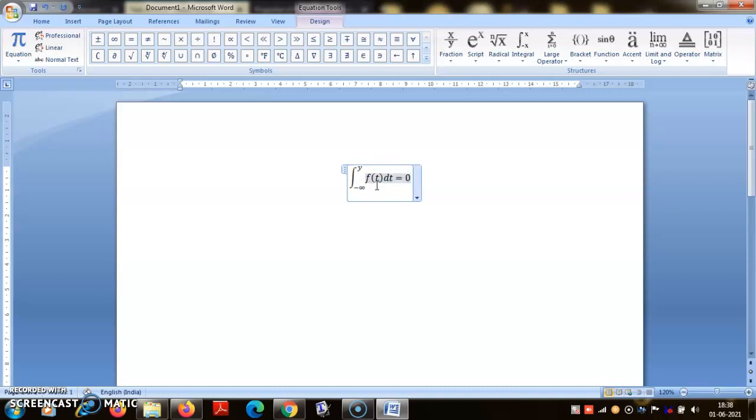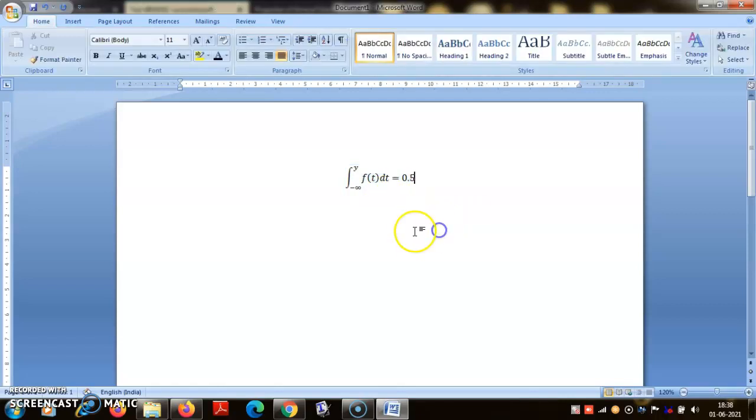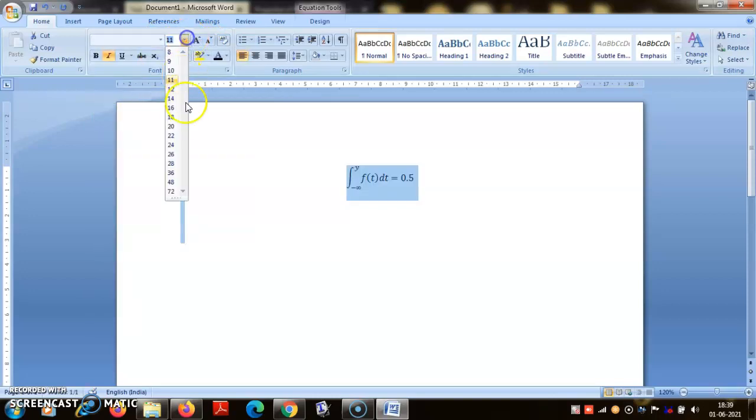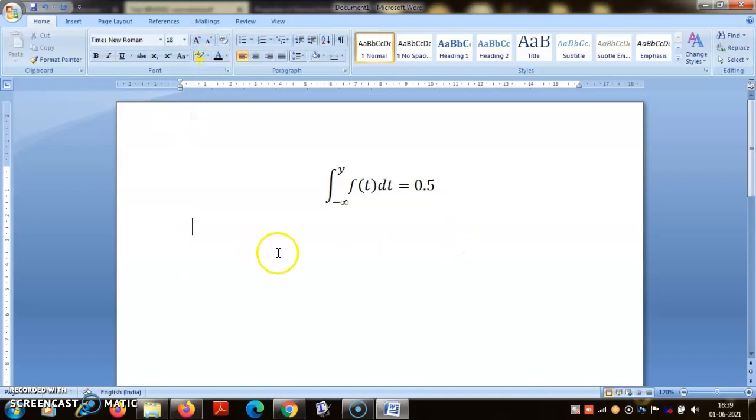That is what is the meaning of the median. For uniform distribution, let me make it Times New Roman so that we can see. Now for uniform distribution, what is the density? The density is one on the interval 0,1 and outside it is zero.